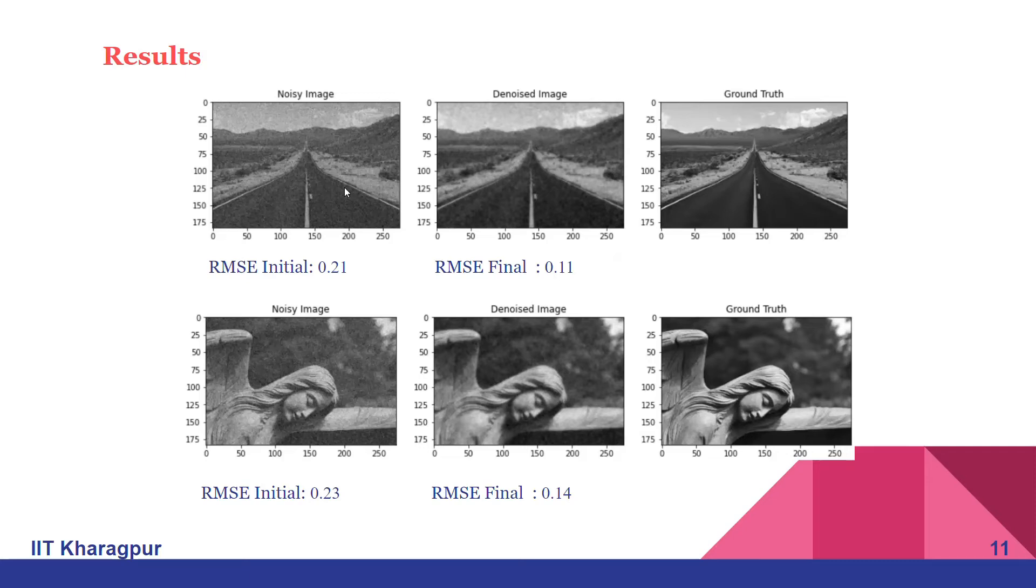Here we can observe that in denoised images some smoothing function is happening. This is due to the fact that we took a quadratic function as the MRF prior.